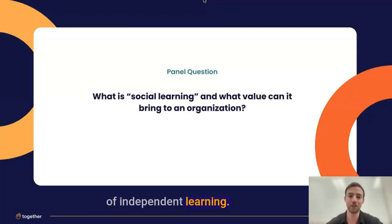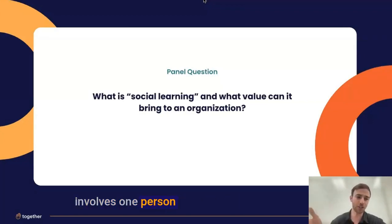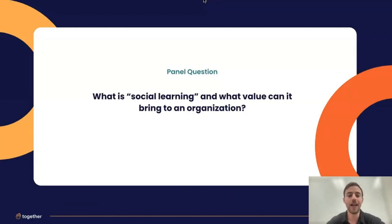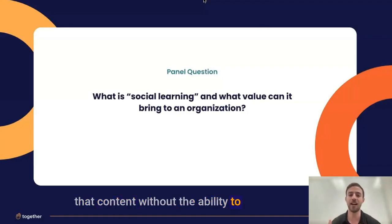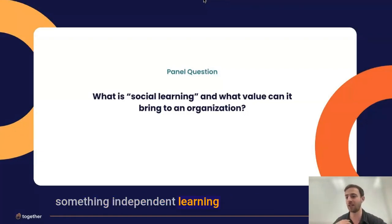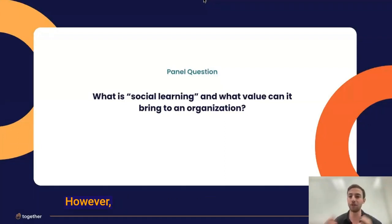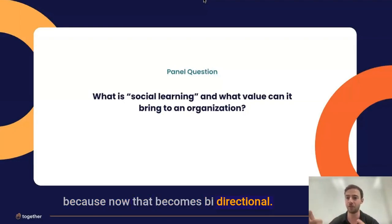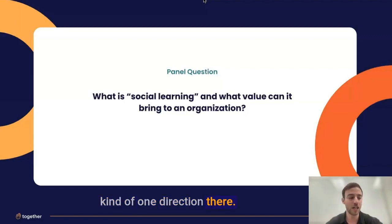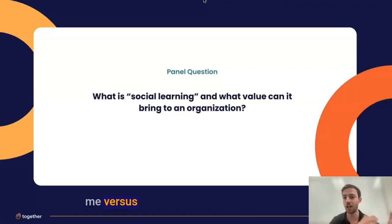Social learning is the opposite of independent learning. Independent learning involves one person learning on their own by studying content or practicing. And importantly, even if that content is written by a colleague, it's that unidirectional consumption of content — without the ability to ask questions and discuss further — that makes something independent learning. So reading documentation is independent learning. However, if you have a comment section or you can follow up with a call to ask questions and get answers, that would be social learning, because now it becomes bi-directional. It could be workshops and training, it could be group circles — that's all social learning to me versus independent learning.